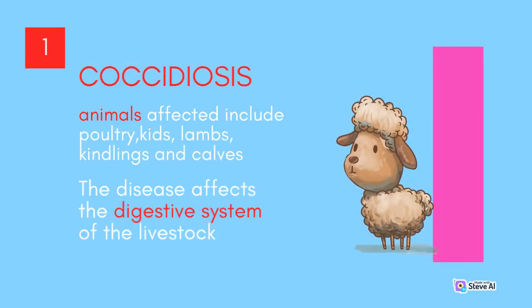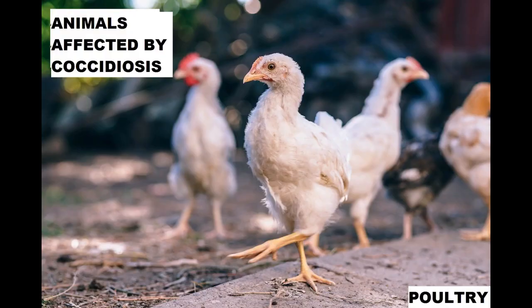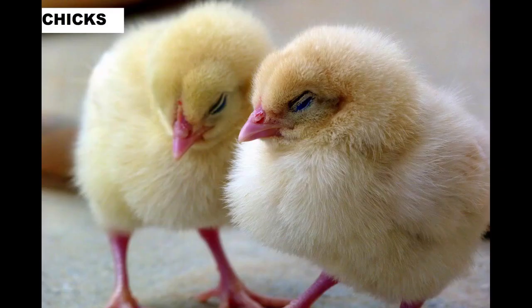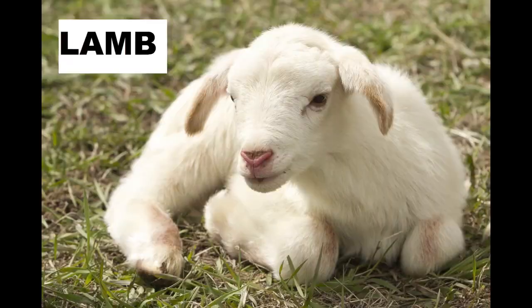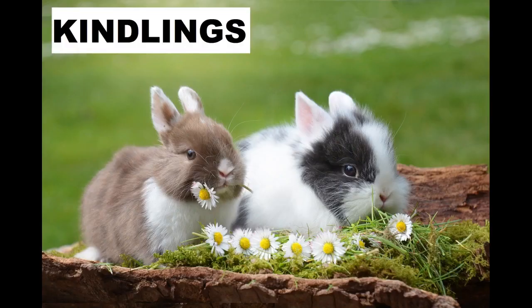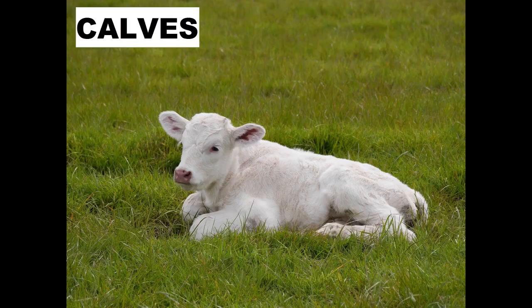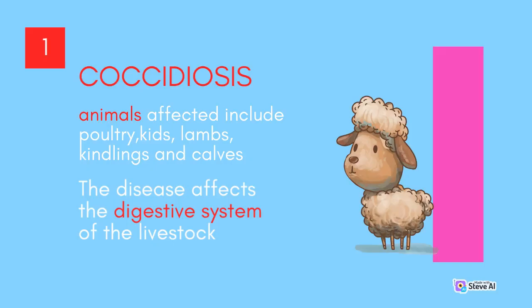Coccidiosis. Animals affected include poultry, kids, lambs, kindlings and calves. The disease affects the digestive system of the livestock.